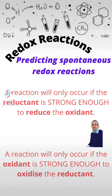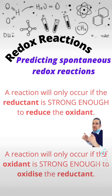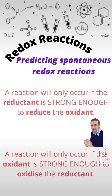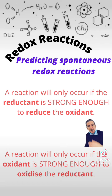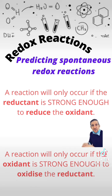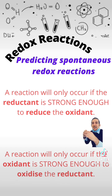A large part of redox chemistry is understanding if a reaction will occur. The guiding principle is this: a reaction will occur if the reductant is strong enough to reduce the oxidant, or vice versa. A reaction will only occur if the oxidant is strong enough to oxidise the reductant, because the oxidant is the thing that gets reduced by the reductant. For a reaction to happen, the reductant needs to be strong enough to make this happen.